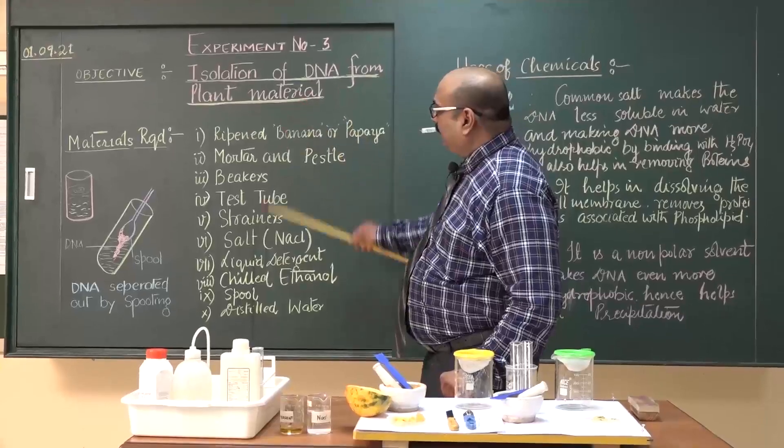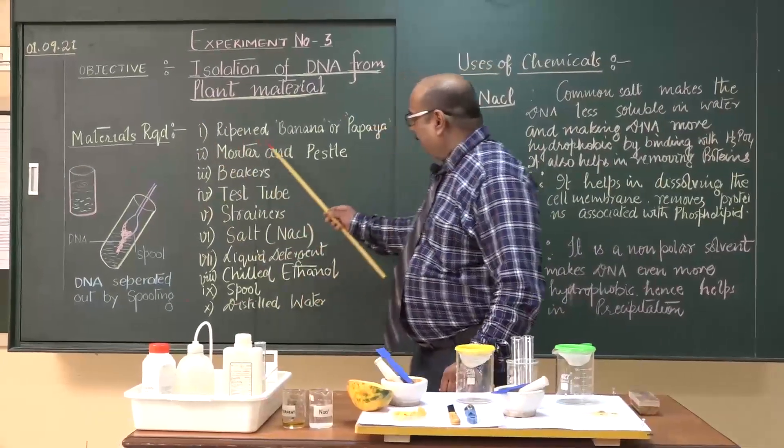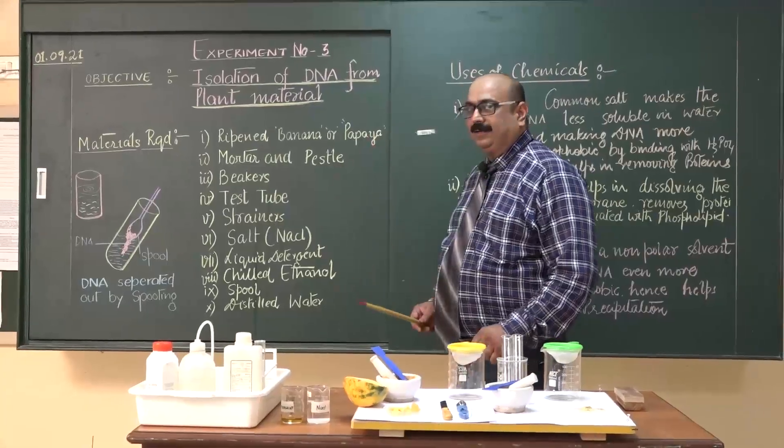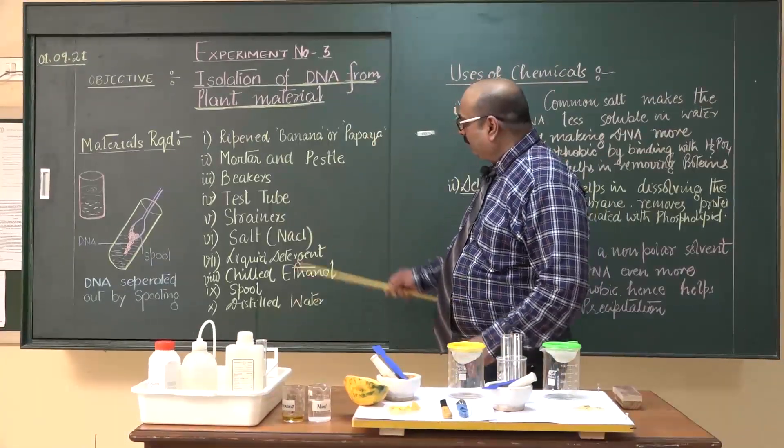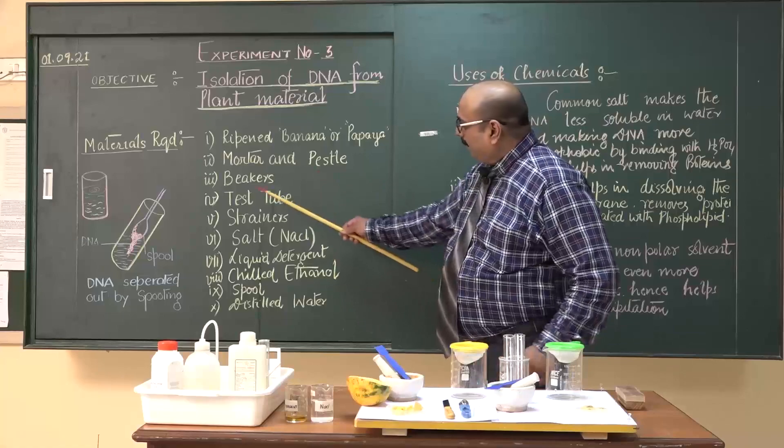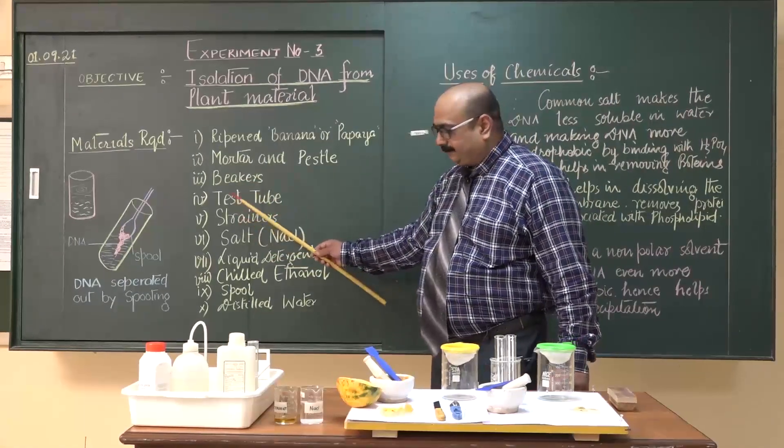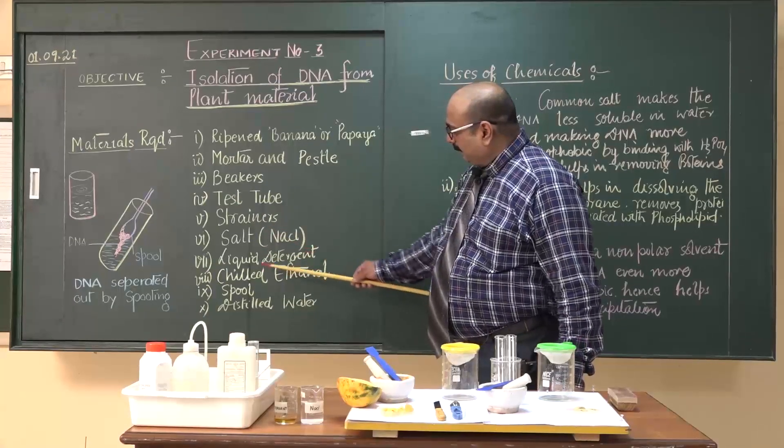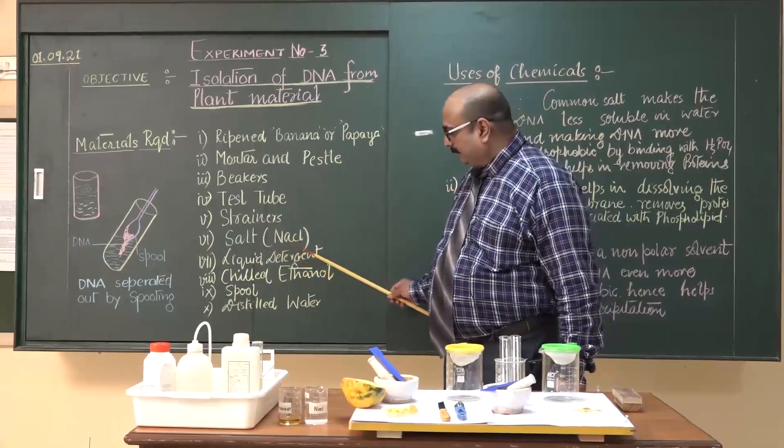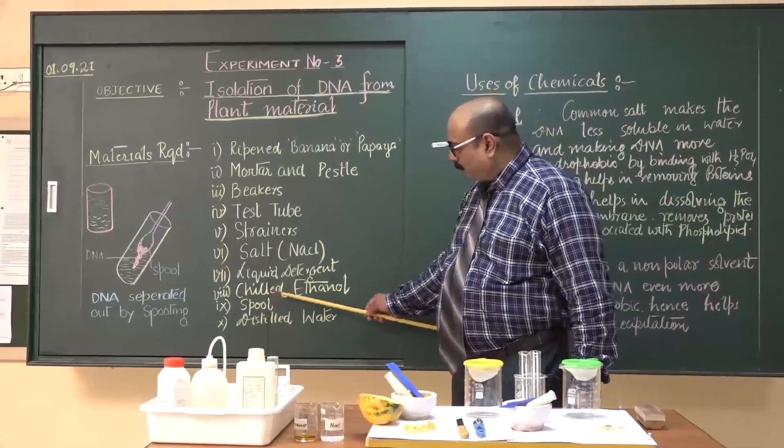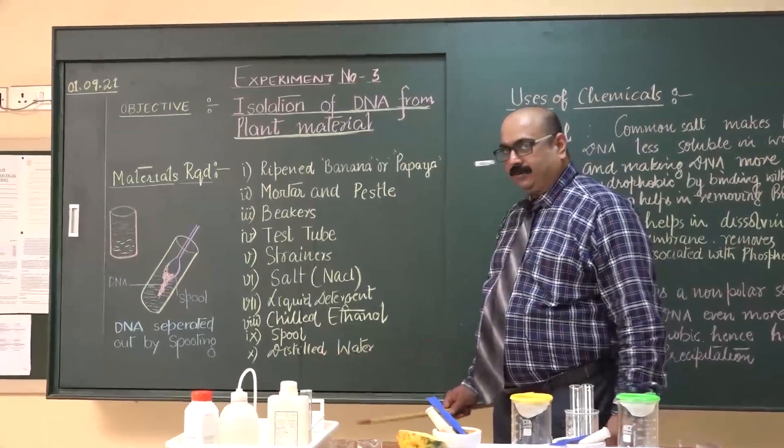Isolation of DNA from plant material requires ripened banana, you may take papaya or spinach also, mortar and pestle, beakers, test tubes, strainers, salt NaCl, liquid detergent is required, chilled ethanol, spool, and distilled water.